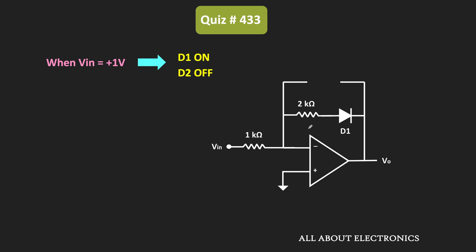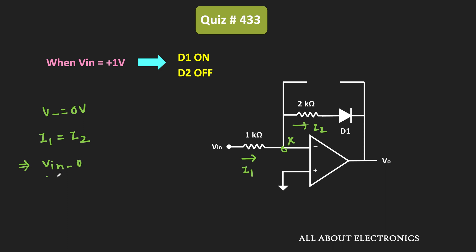Looking at the equivalent circuit, through the resistor and diode we have negative feedback, and because of this negative feedback we can apply the concept of virtual ground. The voltage at the inverting terminal will be equal to 0V. Calling this node X, by applying KCL at this node we can find the output voltage. Let current I1 flow through the input resistor and I2 through the feedback branch. So I1 equals VIN minus 0 divided by 1 kΩ, and that should equal 0 minus (−0.7V), the voltage drop across diode D1, minus Vout, all divided by 2 kΩ.